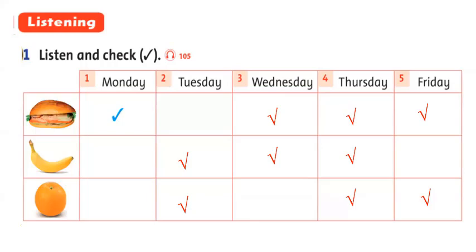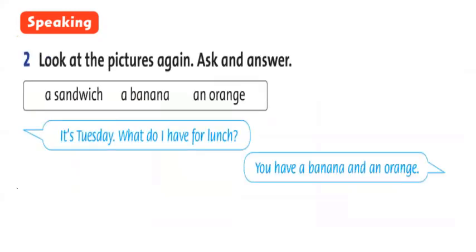Good job. Have you finished? Look at Part 2 — Speaking. Number 2. Look at the pictures again. Ask and answer. Now, student, let's read: a sandwich, a banana, an orange, right? For example, look at this. It's Tuesday. What do I have for lunch? You have a banana and an orange, right? Okay, student, try to practice speaking at home.